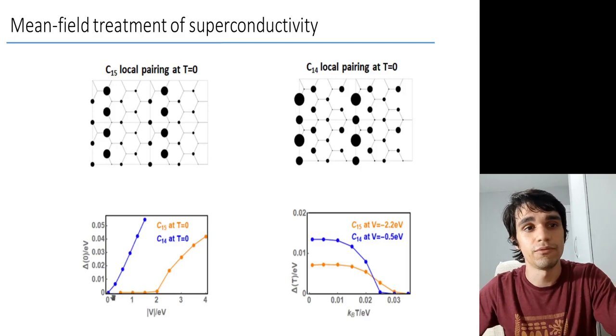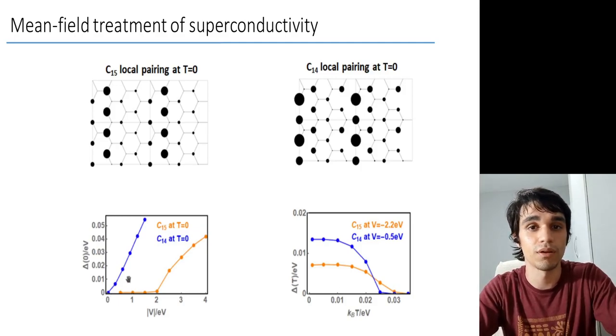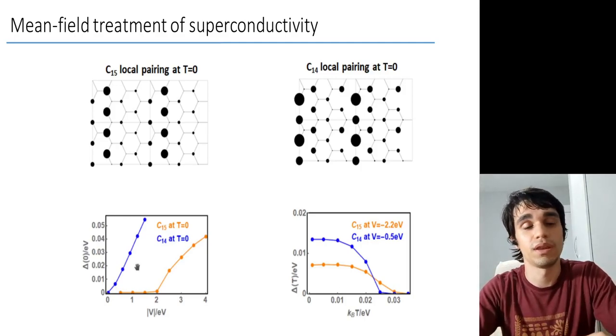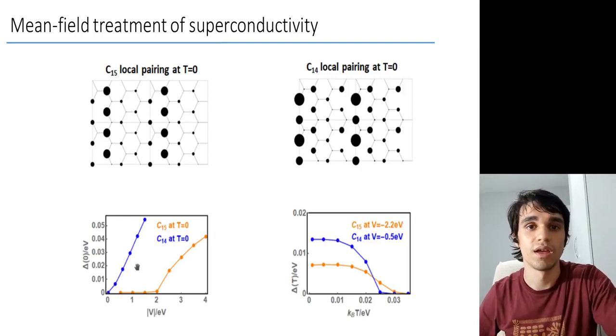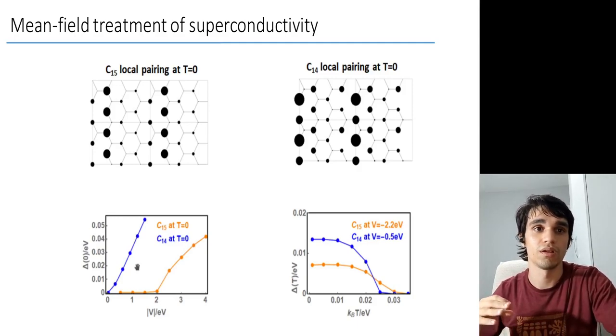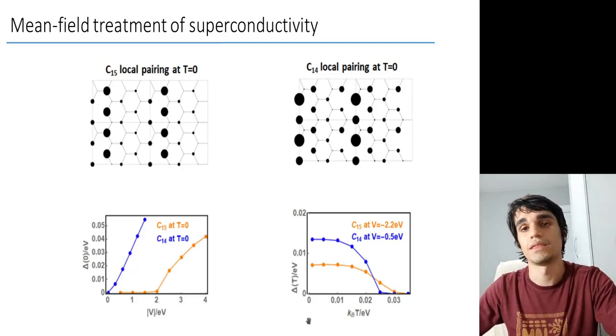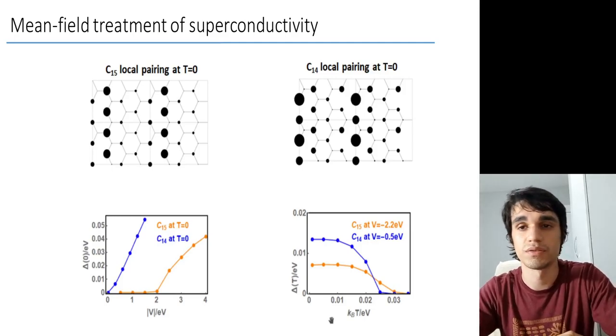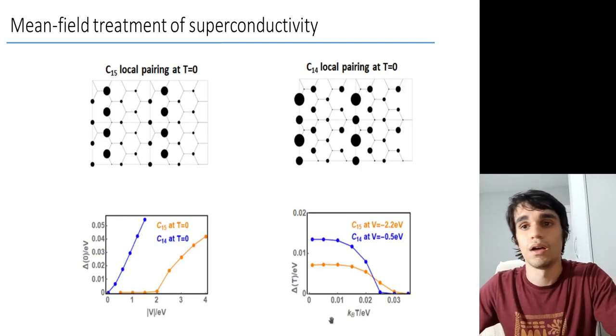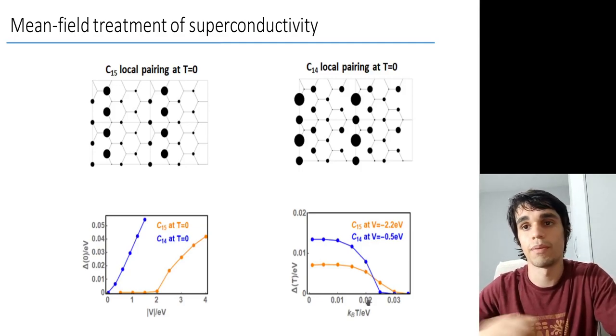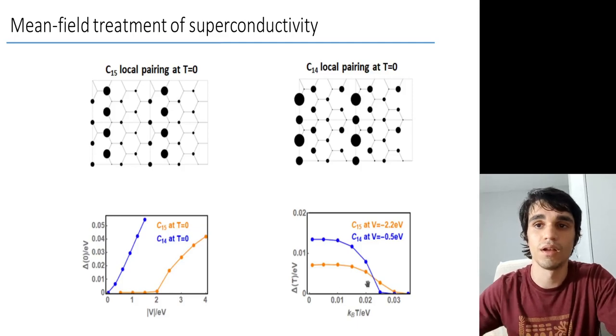But in the C14 case, we have a more hopeful picture, because a much smaller pairing potential is required to support this superconducting phase, meaning that this would suggest that more narrow bands should make superconductivity easier. And the temperature dependence on this pairing is very similar to weak coupling superconductors. Meaning that when the temperature is of the order of the pairing potential, then your superconducting phase disappears.